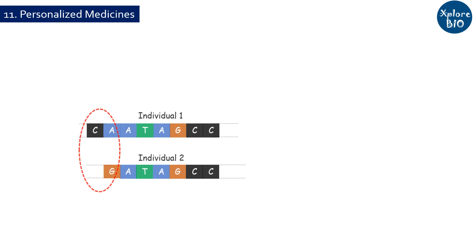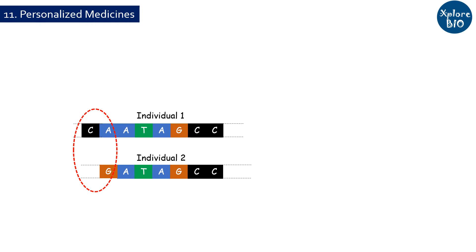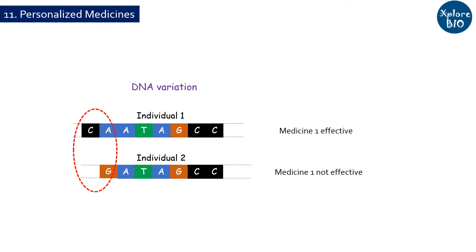This technology has a role in personalized medicine. Each individual has a unique genetic makeup and therefore not all medicines work the same way for each person. Recombinant DNA technology can be used to identify genetic variations that influence a person's susceptibility to disease or response to medication, and this information can be used to develop personalized treatment plans that are more effective and have fewer side effects.